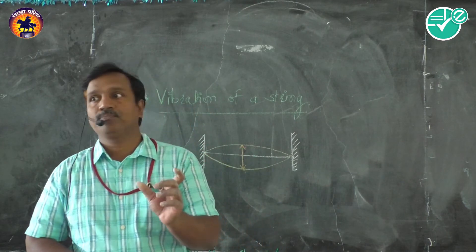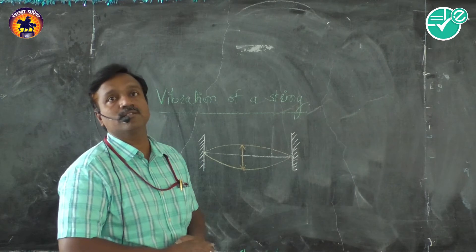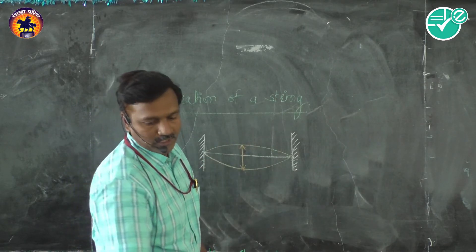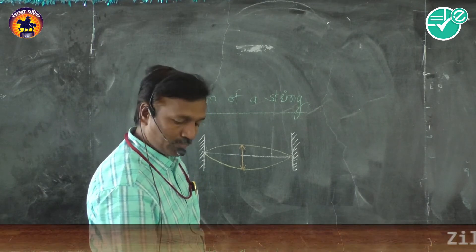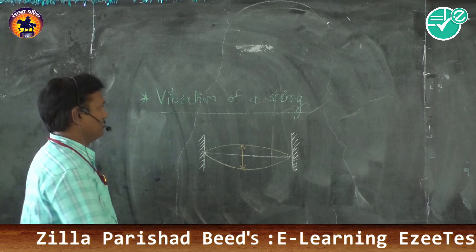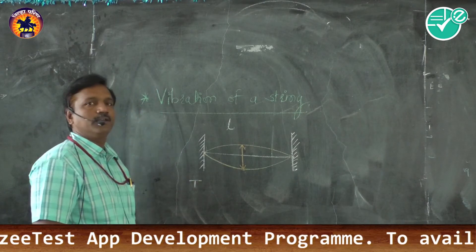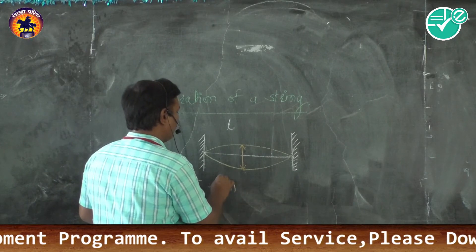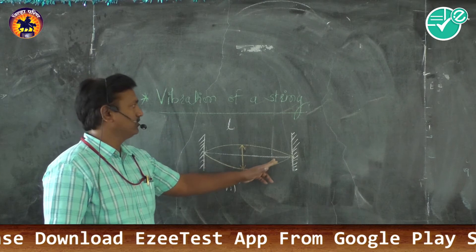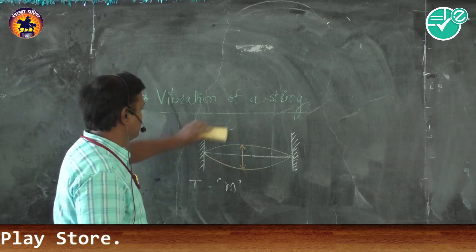A picture or figure persists on our eyes for a fraction of a second, so before the object moves we still see the vibrations in the form of a loop. Now, for the vibrating string, let the length be L, the tension applied be T, and the mass per unit length of the wire be m.